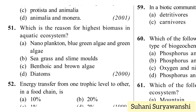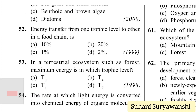Which is the reason for the highest biomass in an aquatic ecosystem? Options: nannoplankton, blue-green algae and green algae, sea grass and slime molds, benthic and brown algae, or diatoms. Benthic organisms are those near the bottom of the sea, so option C — benthic and brown algae — is the answer. Energy transfer from one trophic level to another in a food chain is about 10%. Answer is option A.